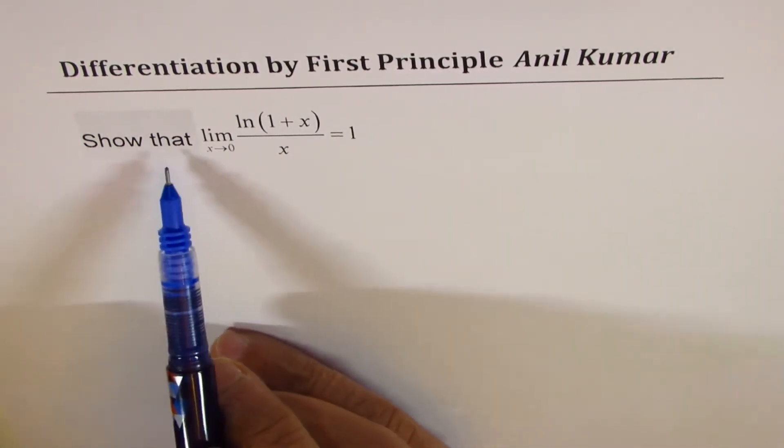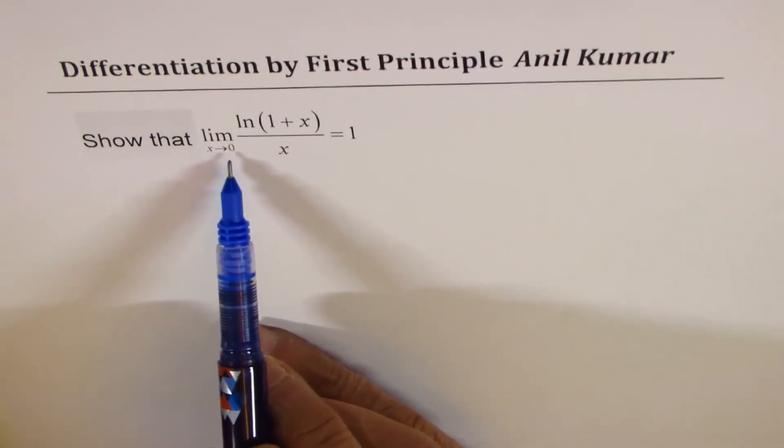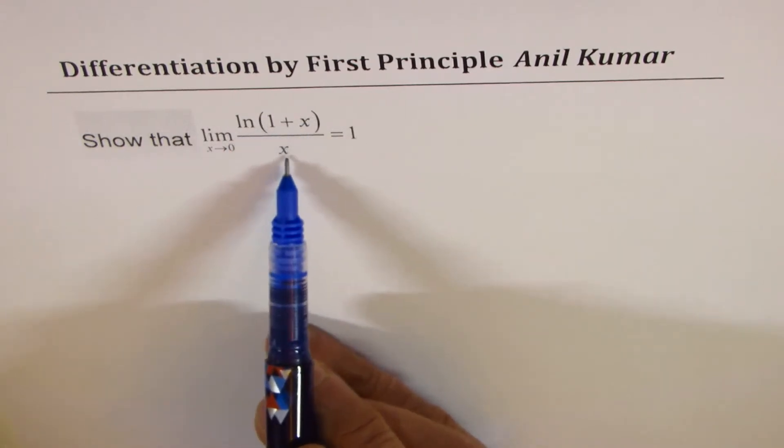So here we will show that limit x approaches 0 for ln(1+x) over x is equal to 1.